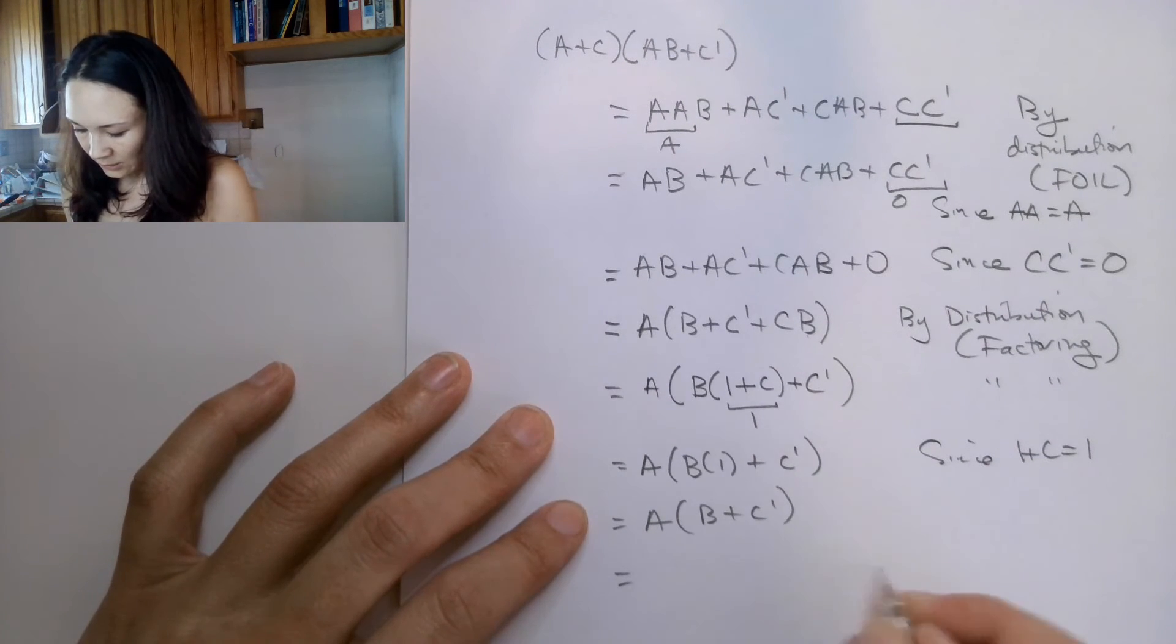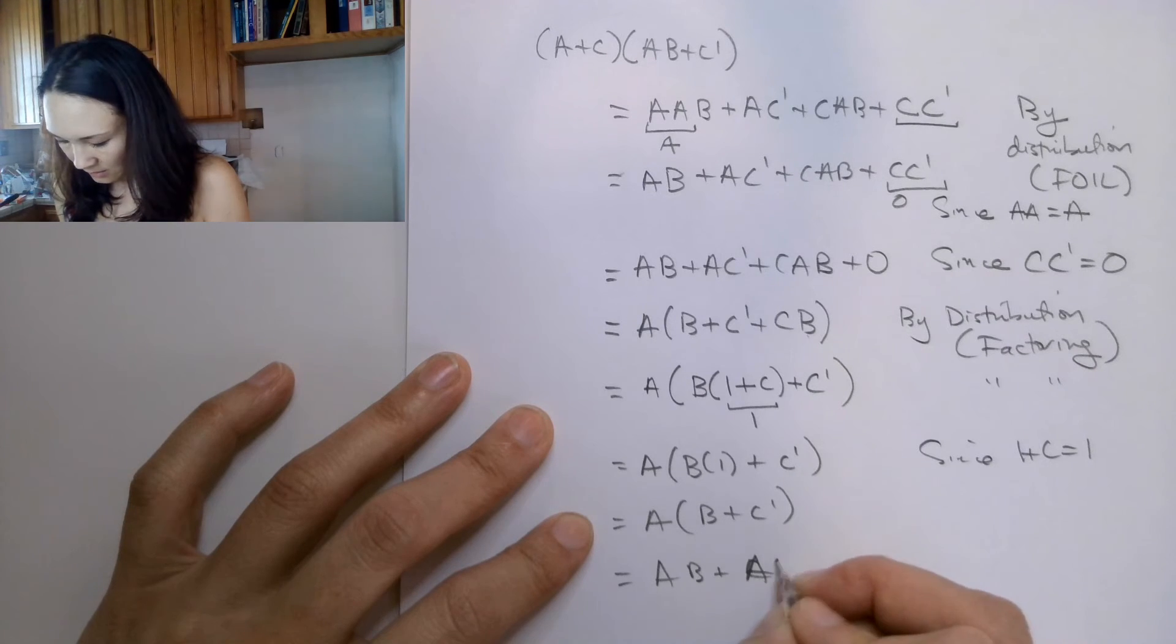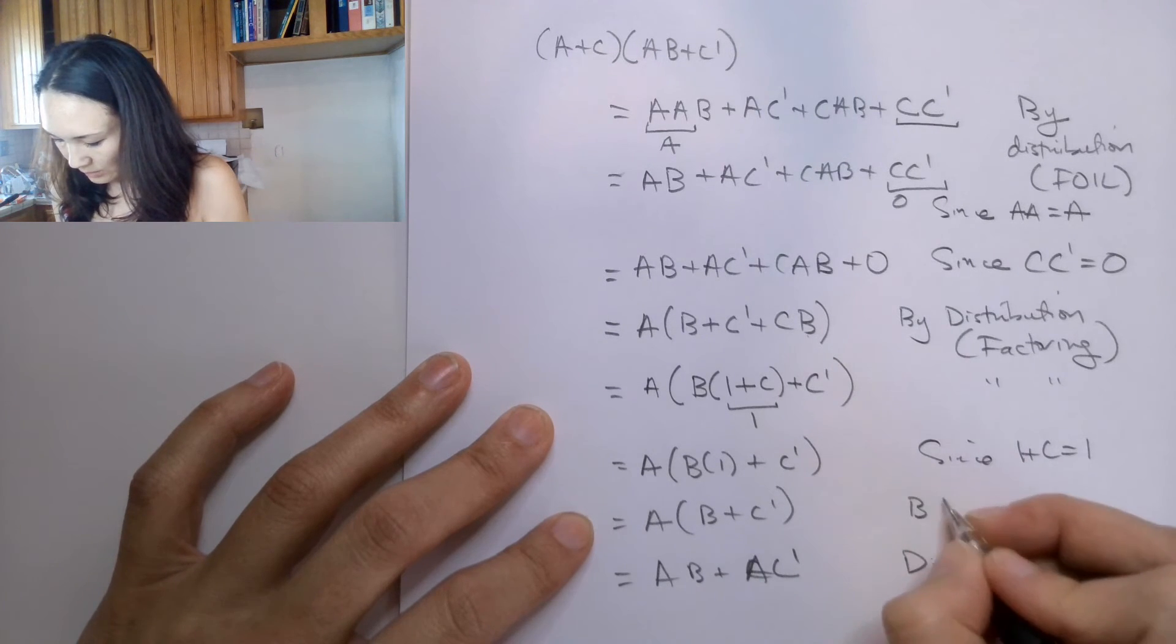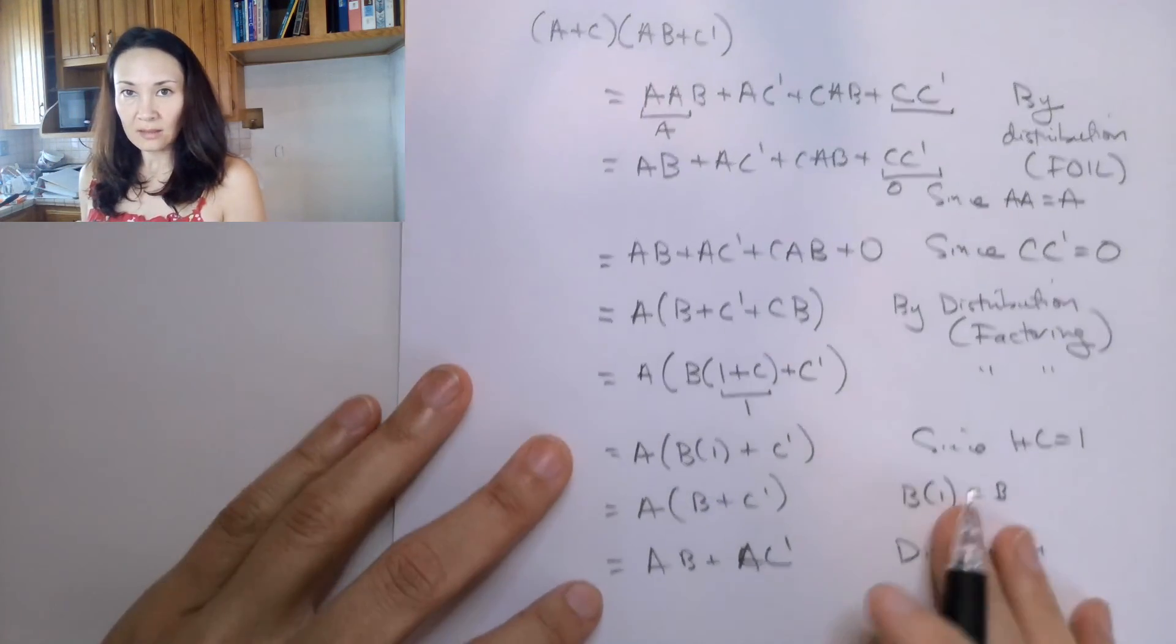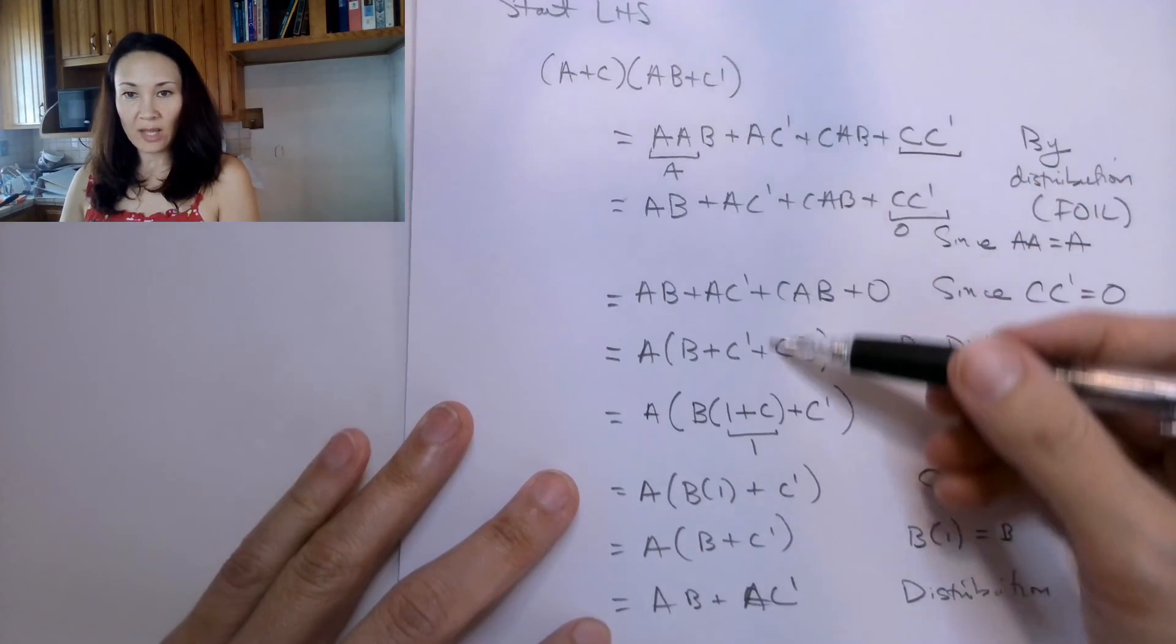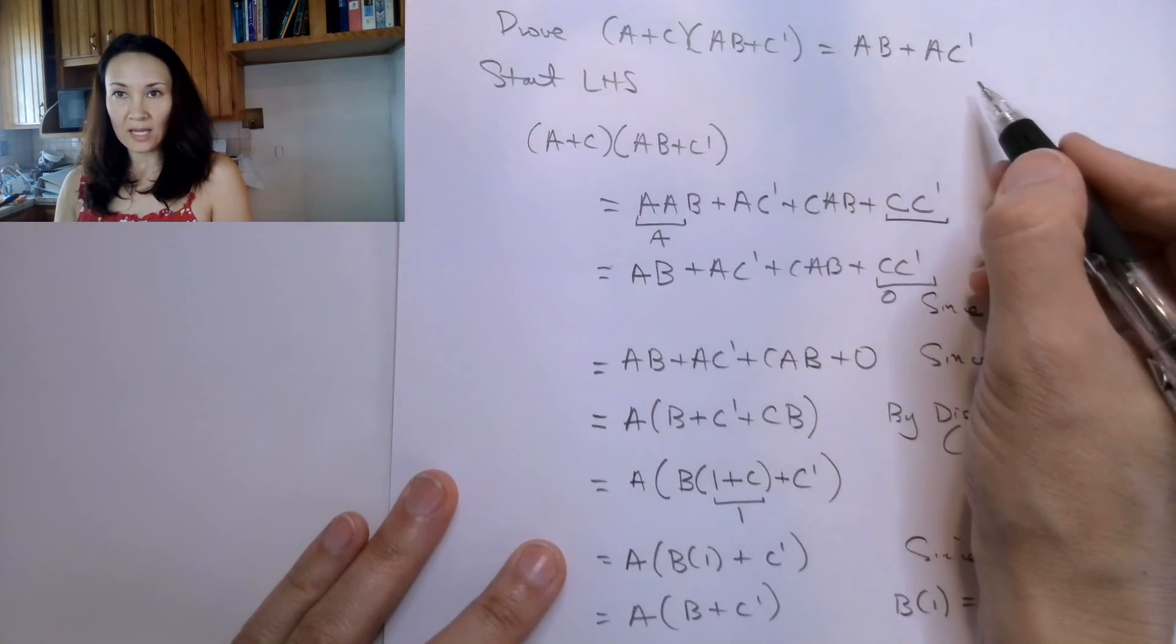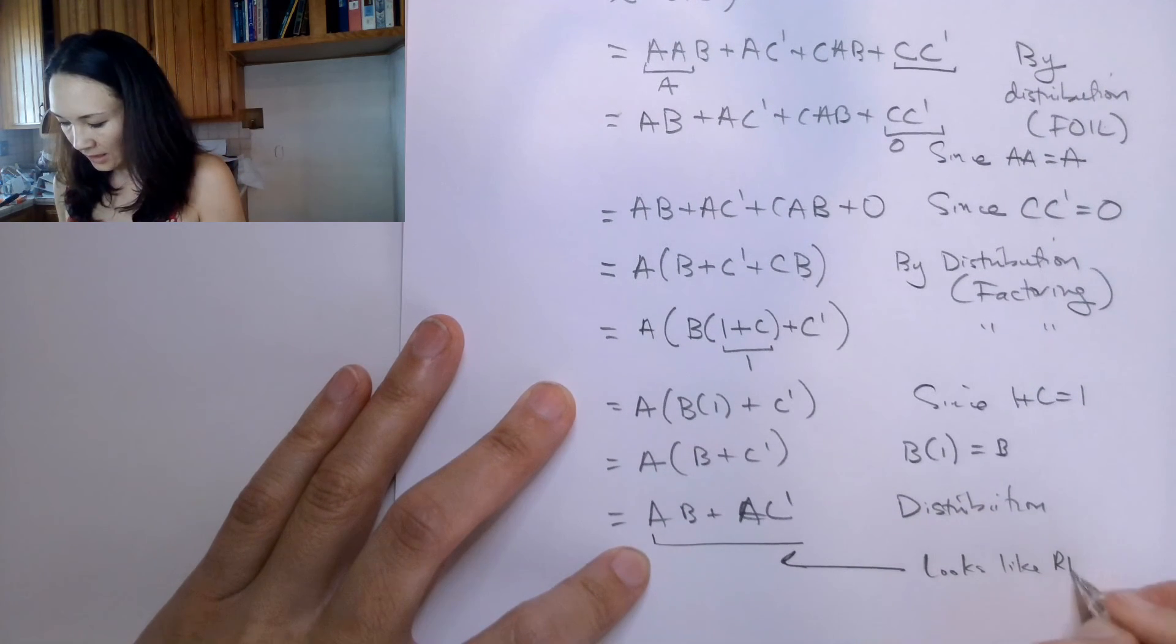So that means A anded with B or C naught. And if I distribute this again, I get A, B or A, C naught. Distribution. Here this justification is B anded with one is just equal to B. And now you'll see that I started with the left hand side of my equation. I applied all of these theorems to get this. And this now looks exactly like the right hand side of my equation. Looks like right hand side.